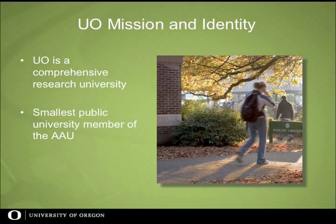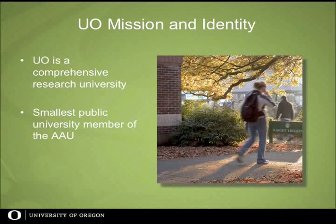The University of Oregon is in Eugene, a hundred miles south of Portland, established in 1876. We're a comprehensive research university with eight schools and colleges: arts and sciences, a graduate school, professional schools in architecture and allied arts, business, education, journalism, music and dance, and law. In addition to our Eugene campus, we have teaching and research facilities in Portland, in Bend, and a Marine Research Institute in Charleston on the Oregon coast. Total enrollment fall 2009 is 22,300; undergraduate enrollment is a little over 18,000. We are the smallest of the public university members of the AAU, and we actually like this scale — it allows us to develop a cohesive campus community while still being large enough for significant research initiatives.